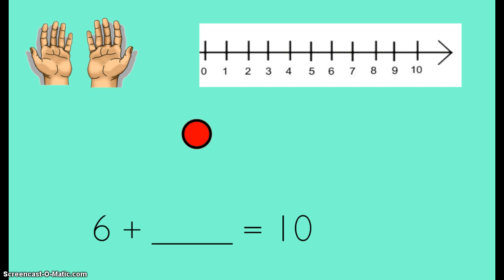We learned 3 different strategies to figure out an unknown addend. You could use your fingers. You could use a number line. Or you could use counters or a picture. I have a number 6 plus what equals 10. I need to know what number is my missing addend. What number would I need to write on the line to get to 10 as my total.